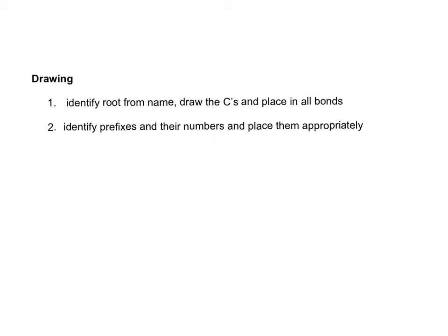So drawing, you want to first identify how long your carbon chain is from the name. You draw your carbons, and you'll place in your bonds. Then look at the prefixes, look at what comes before that, and their numbers, and place them appropriately. 2-bromopropane is our first example. So we can see from this that propane is our root, so we know we've got 3 carbons. So draw out your 3 carbons.